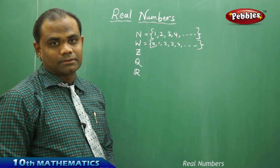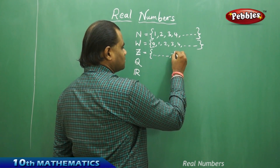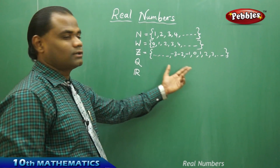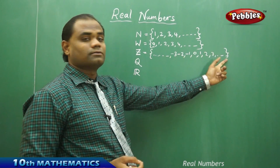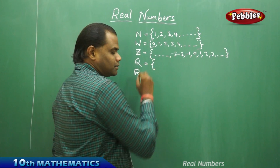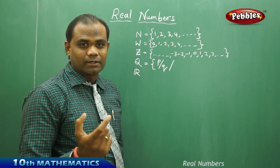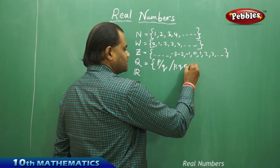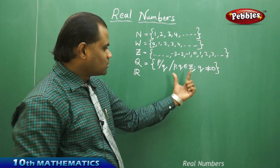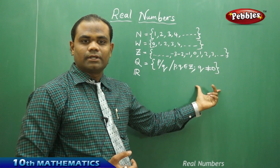Next, integers start from negative infinity, accepting all negative numbers: minus 3, minus 2, minus 1, 0, 1, 2, 3, and so on. Integers have both negative and positive numbers, including 0, which is neither positive nor negative. Rational numbers are defined in the general form as P over Q, where P and Q must be integers, and Q should not be equal to 0.